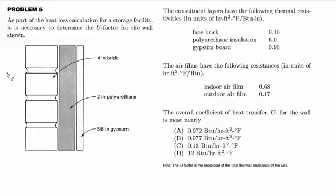As part of the heat loss calculation for a storage facility, it's necessary to determine the U-factor for the wall shown. The constituent layers have the following thermal resistivities in units of hour-foot-square degrees Fahrenheit over BTU inches: face brick, polyurethane insulation, and gypsum board.